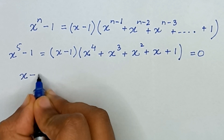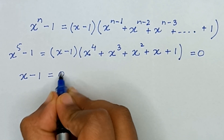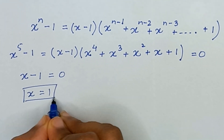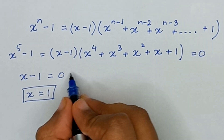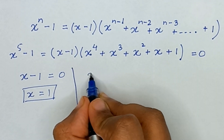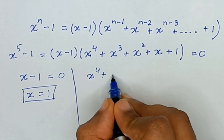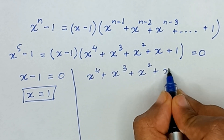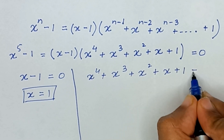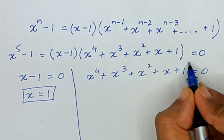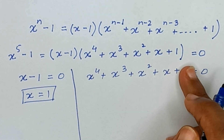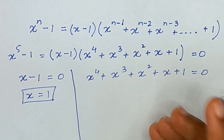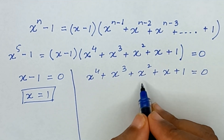From x minus 1 equal to 0, x will be equal to 1. Now for the second case, we have x raised to the power 4 plus x raised to the power 3 plus x squared plus x plus 1 equal to 0. Here x⁴ and x⁰ share the same power sum of 4, and x³ and x share a power sum of 4, with x² as the middle term.